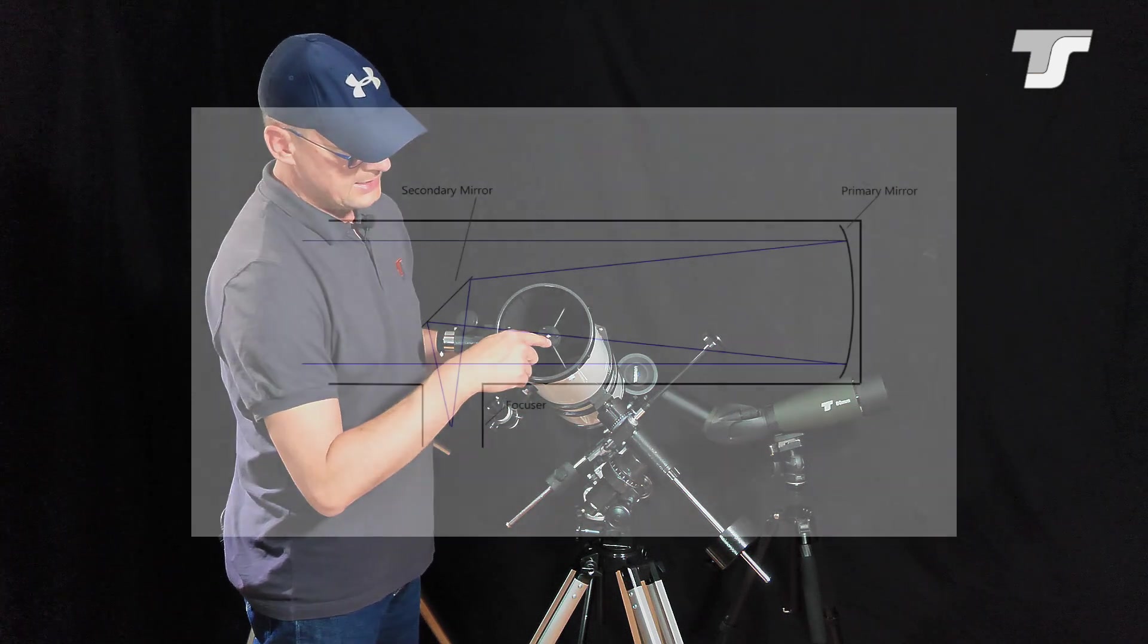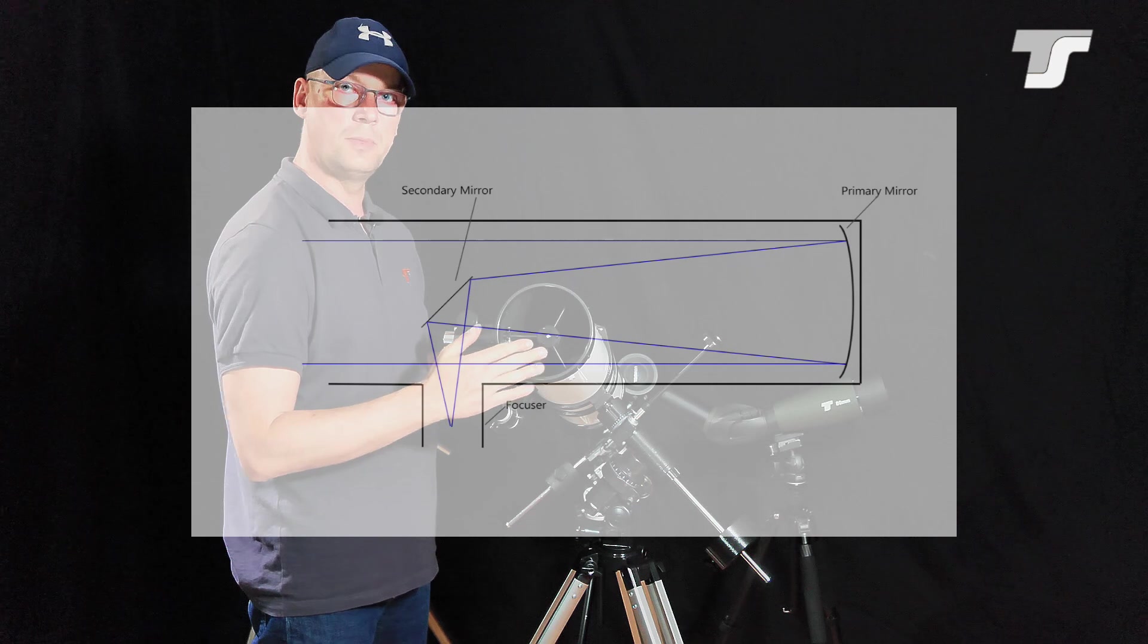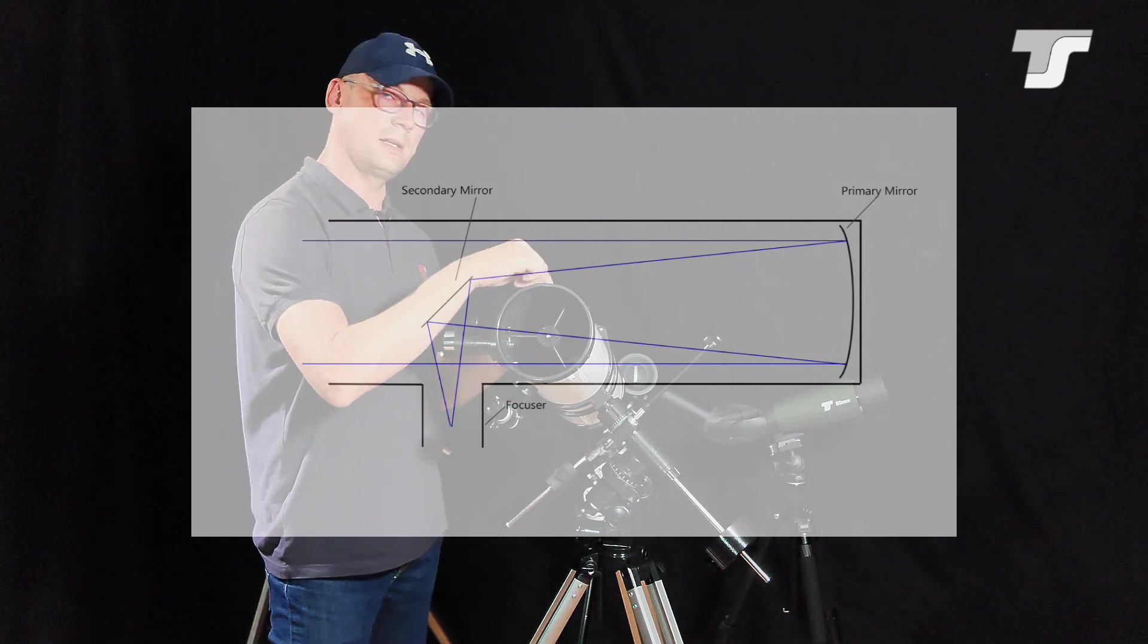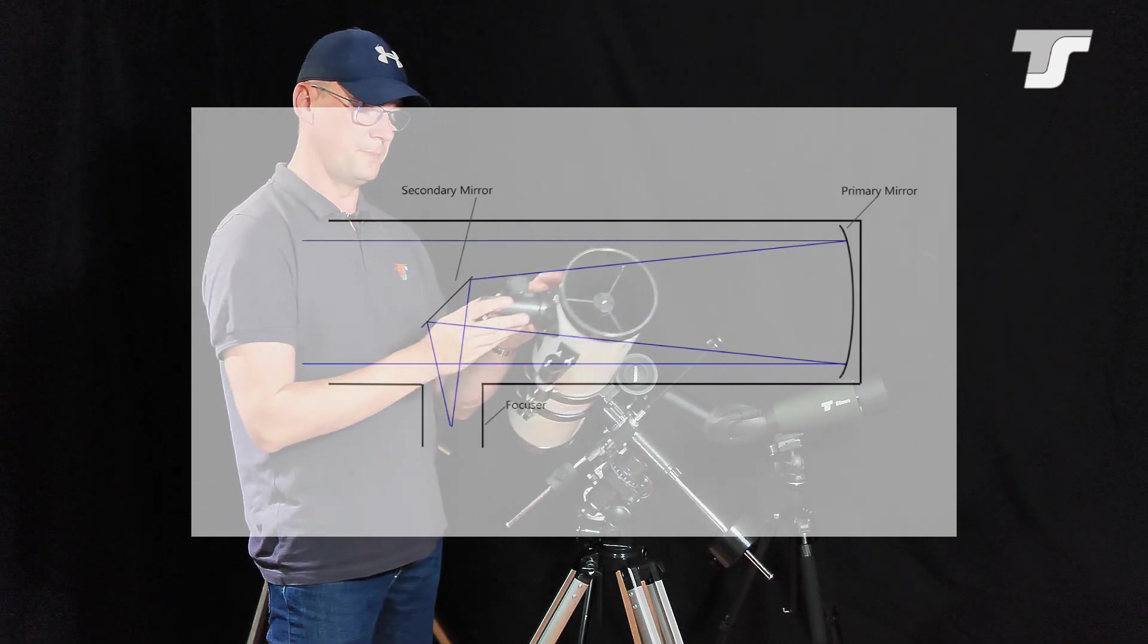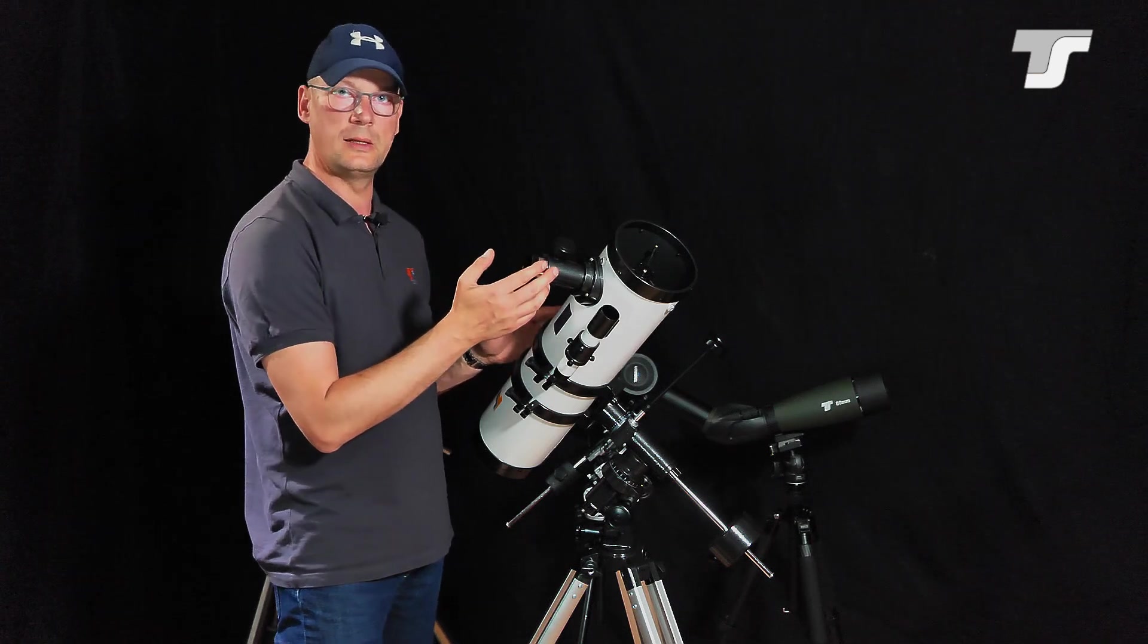Then the light hits this secondary mirror which is flat, just a flat mirror but angled to reflect the light out of the tube here. Here you have a very convenient position to look in the telescope.